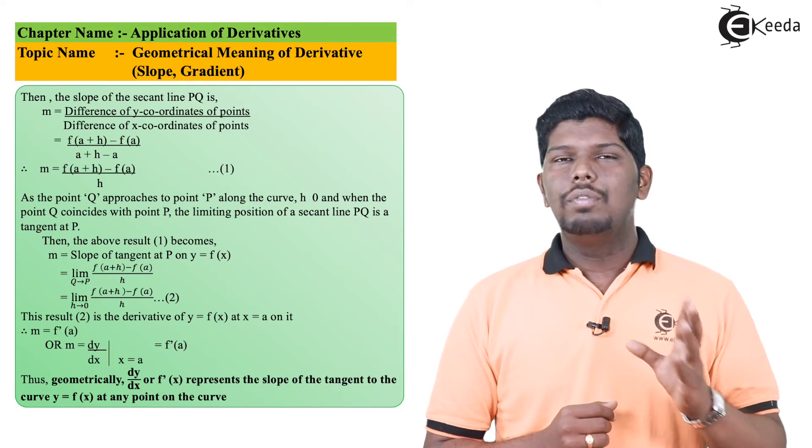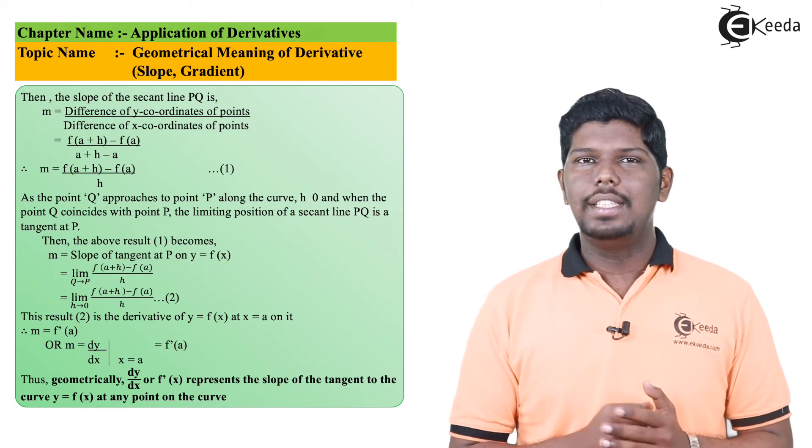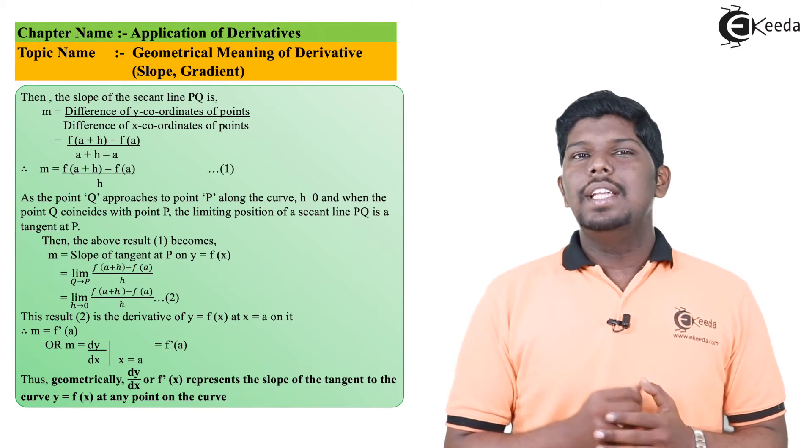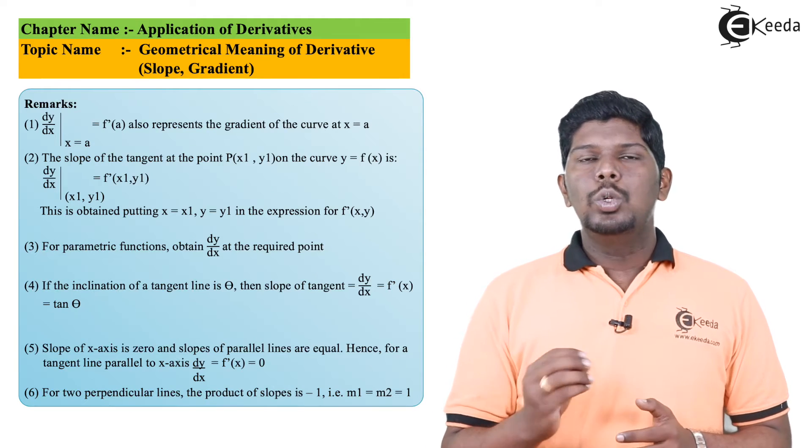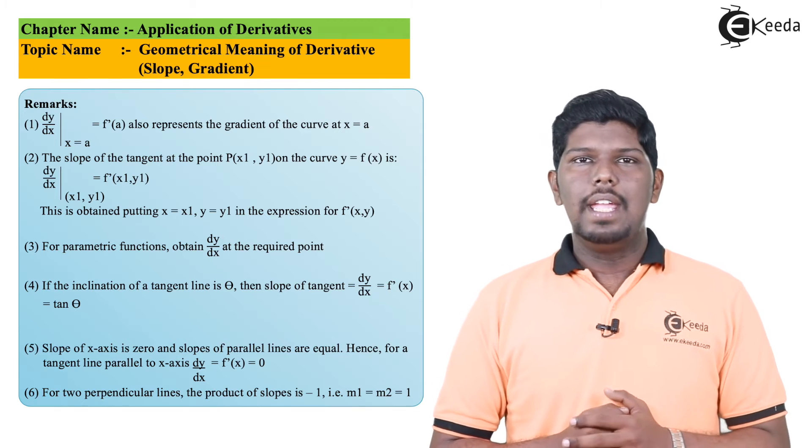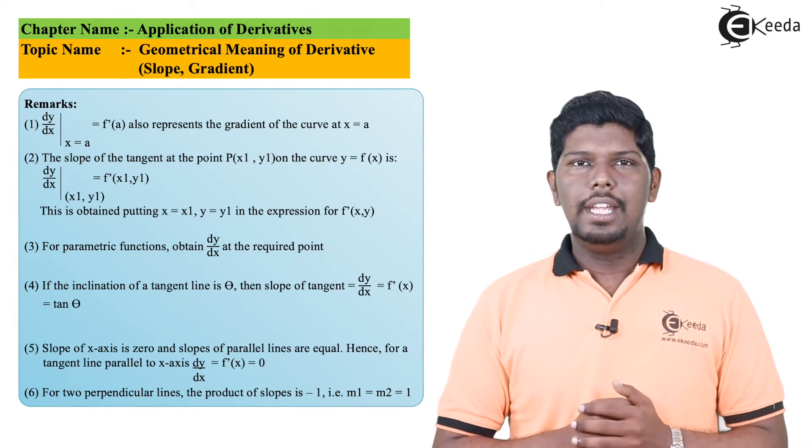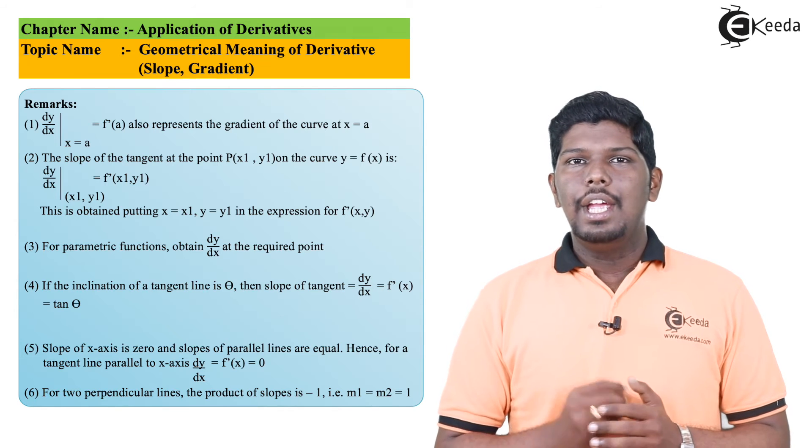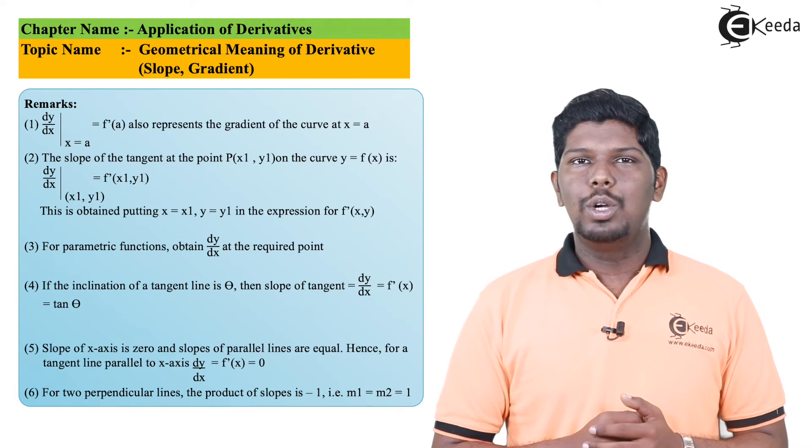Thus, geometric meaning of the slope of tangent is nothing but dy/dx, or you can say f'(x). Now let us see few important points that are related to slope of tangent. So if I say the value of dy/dx at a particular point x = a will give you f'(a), and that will represent gradient of the curve at x = a.